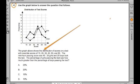The graph shows the distribution of scores on a test with possible scores of 10, 20, 30, 40, 50, and 60. The minimum passing score was 40. 20 girls and 20 boys took the test. The percentage of girls passing the test was how much greater than the percentage of boys passing the test? This is a great problem. I love this problem.